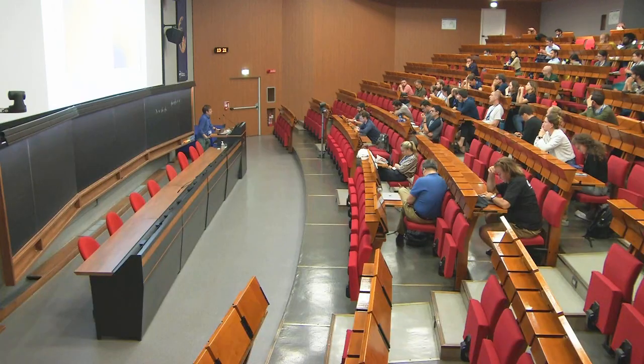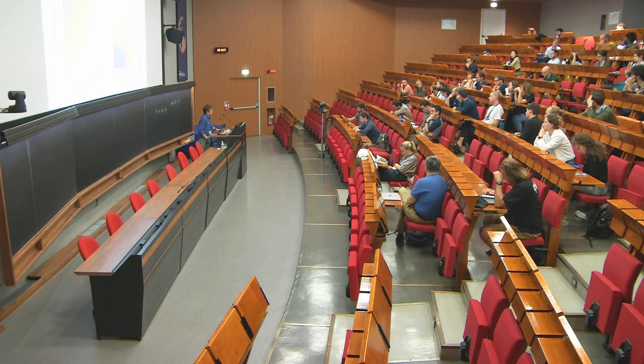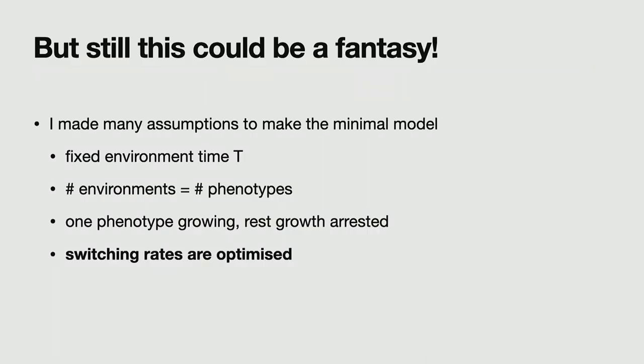I also had a question about the switching rate. So if a cells get stuck in an intermediate growing rate, like if the phenotype is not the best, but slightly good, and they become then stable, will they be stuck in there? That's, thank you. I have an extra slide. So in this model, I made many assumptions. I have a fixed environment time. I have the number of environments equal to the number of phenotypes. I have one phenotype growing. The rest is growth arrested. But of course I can sample all these things. And what I did is I sample randomly growth rates.